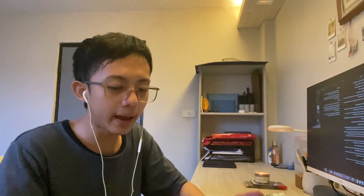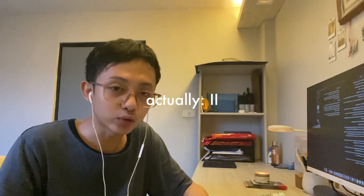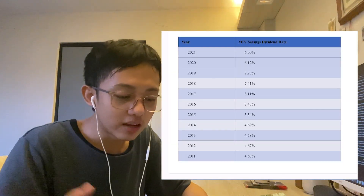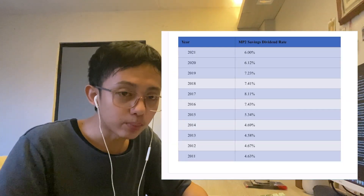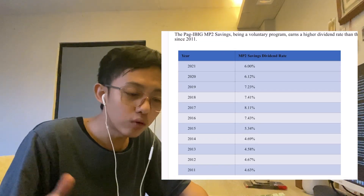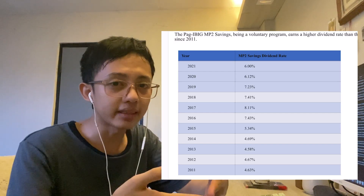Back to MP2 - compared to the regular savings, MP2 has a higher dividend rate. For the last several years, the maximum dividend rate was 8.11% in 2017, and in 2021 the dividend rate was 6%, which is about the current inflation rate. If you are a conservative person depending on your risk appetite, then maybe this is something you can consider.